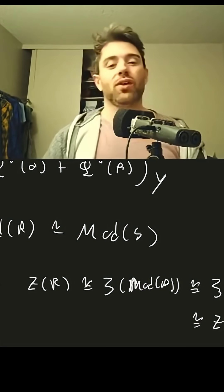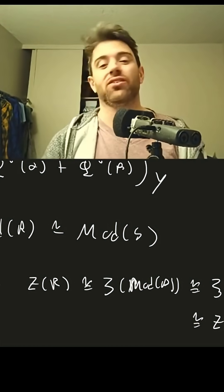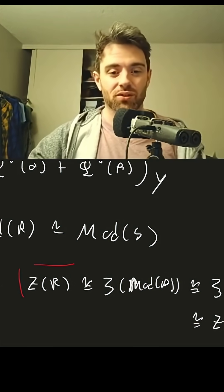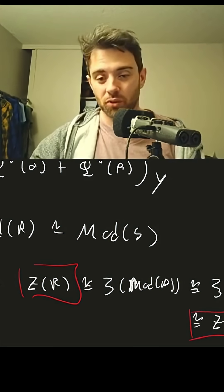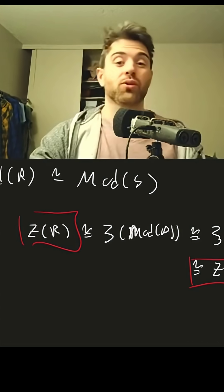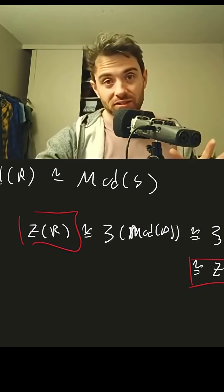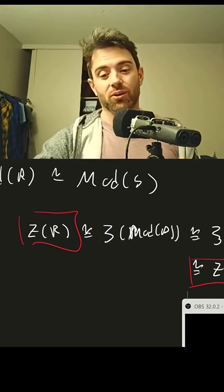So now we know that if you have an equivalence of categories over commutative rings, that the centers of those commutative rings must be isomorphic. And therefore, for commutative rings, they're isomorphic if and only if their module categories are equivalent.